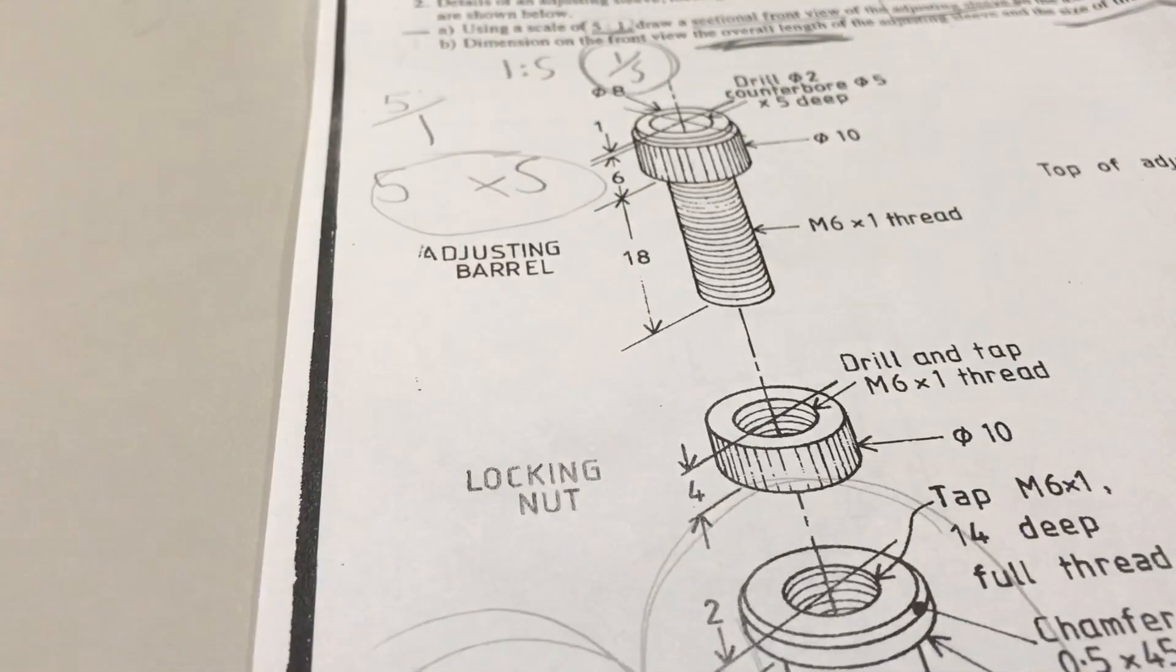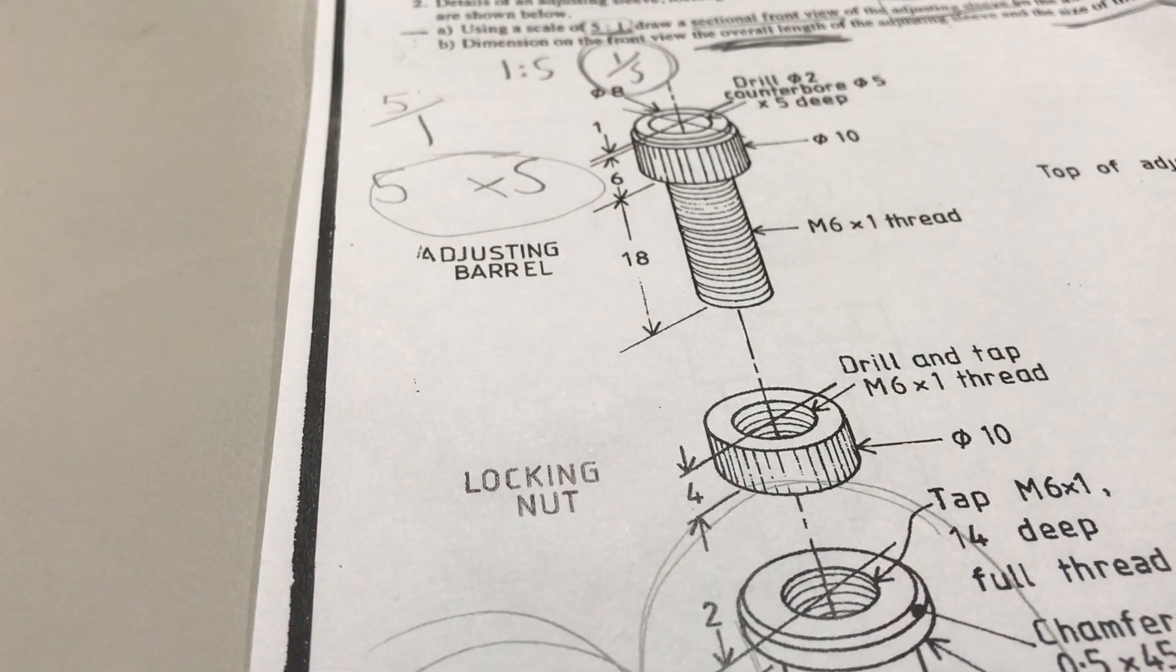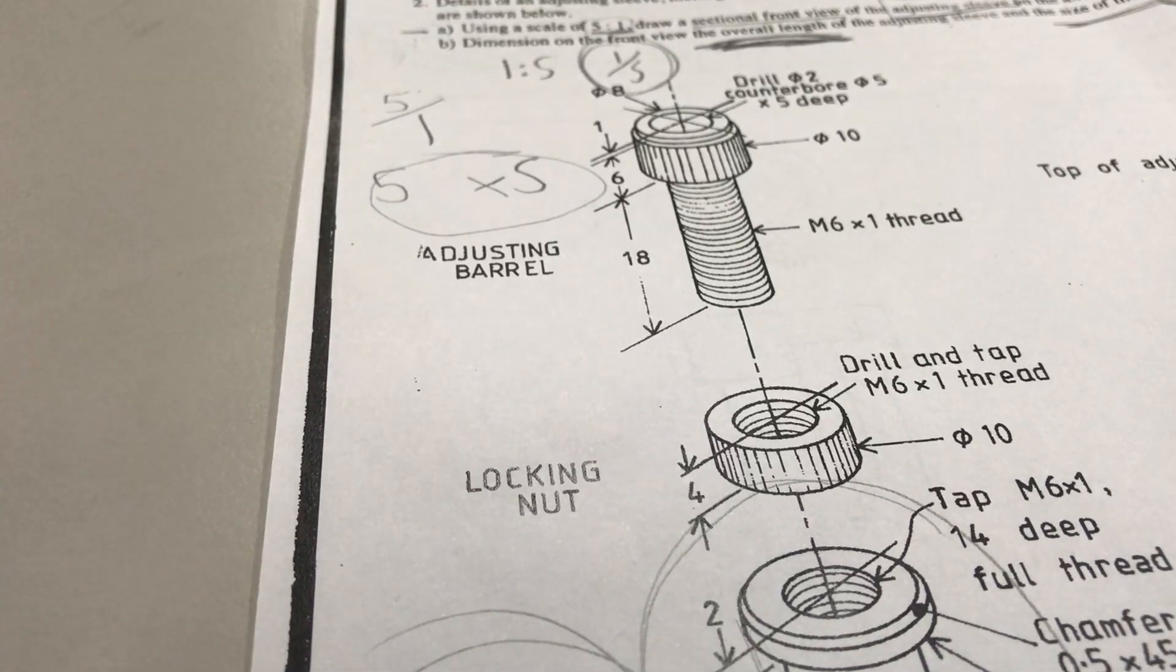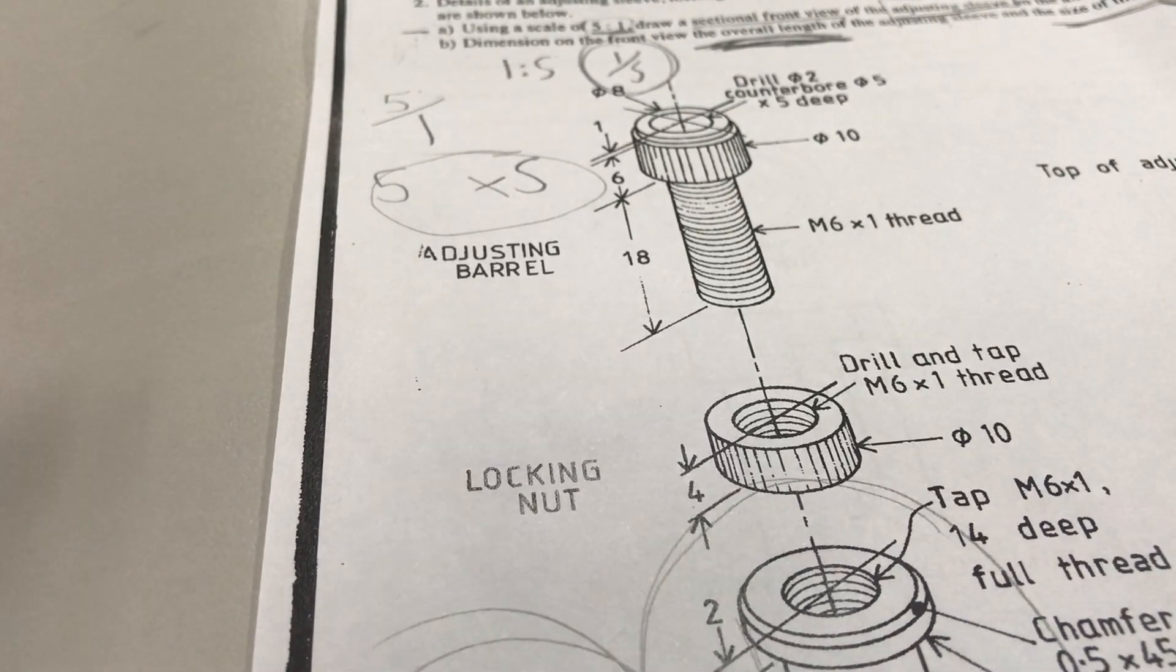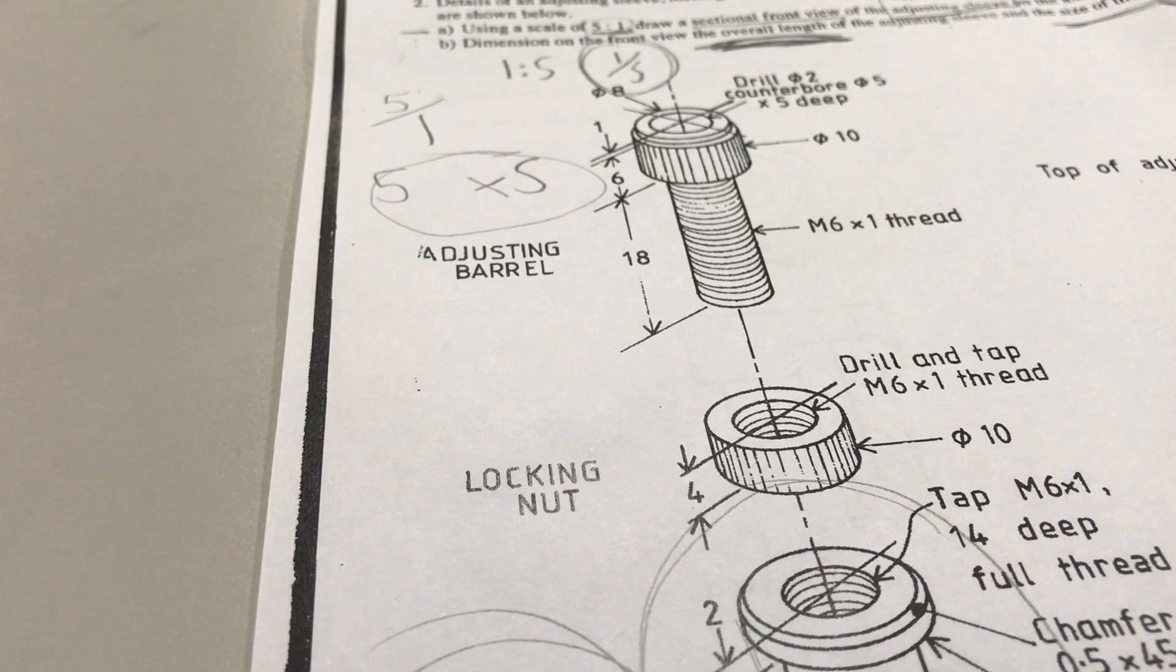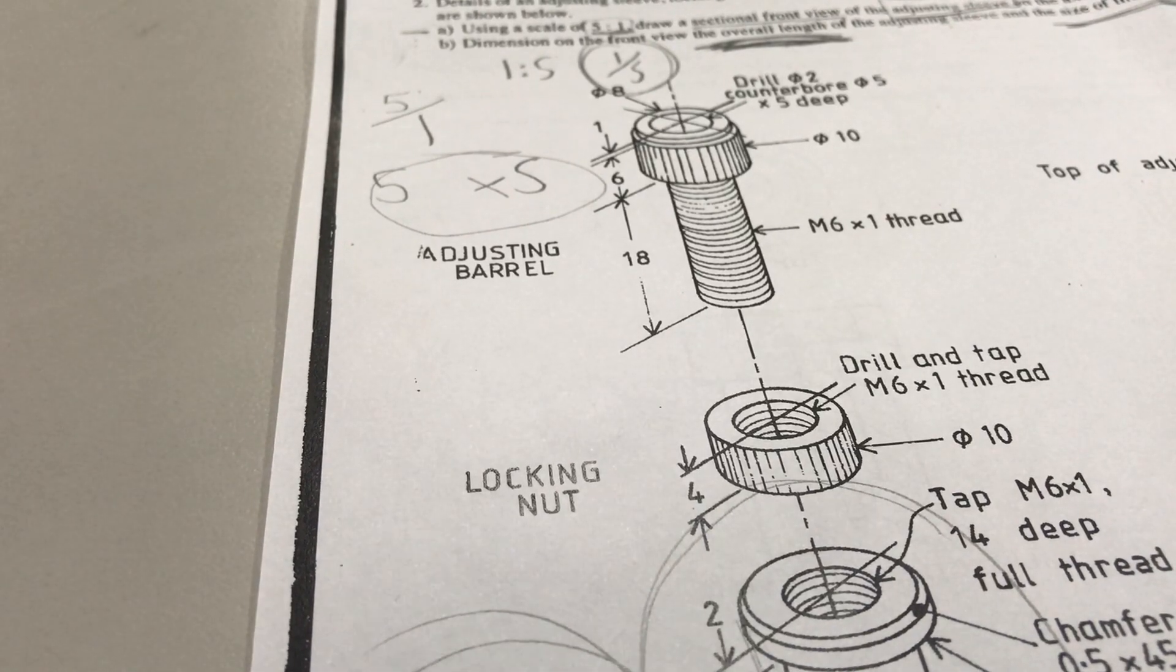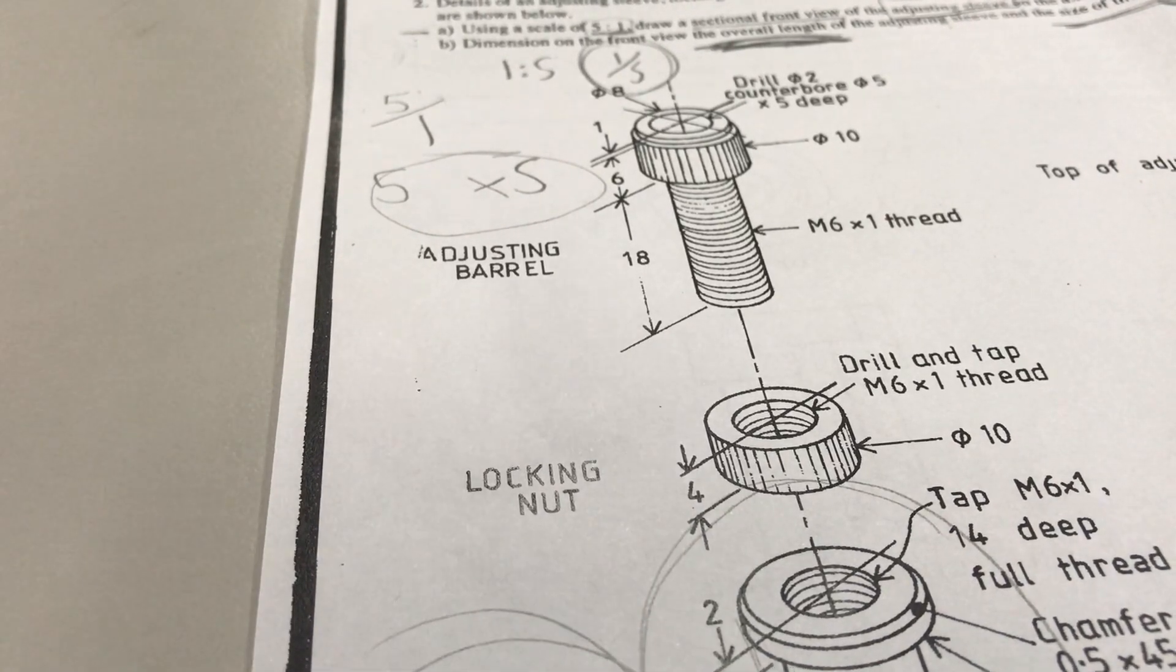So this is video one, and this video was about breaking down the question and understanding the things that we need to understand to complete this exercise of drawing a section view in 5 to 1 scale. Now go to video two.